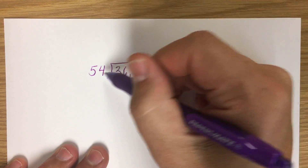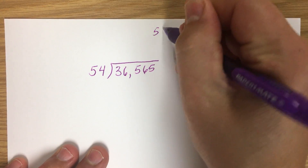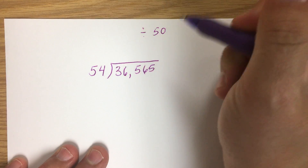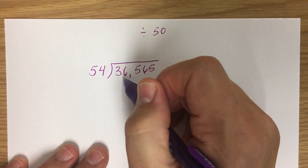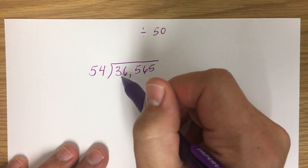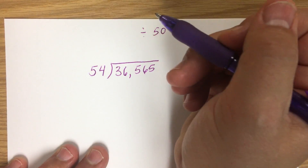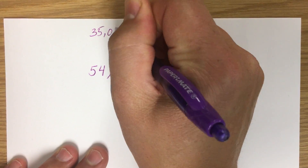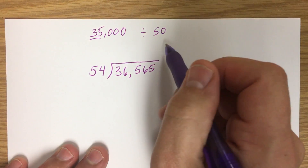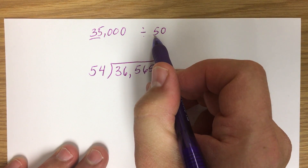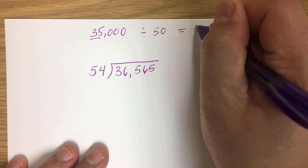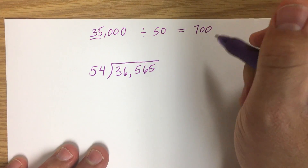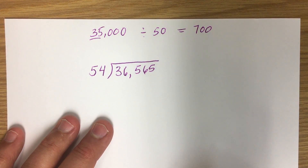I'm going to round 54 to 50 — that's my divisor — and round 36,565 to 35,000. So I have an easy problem: 35,000 divided by 50. Since 35 divided by 5 equals 7, and I have three zeros minus one zero, that's two zeros. So whatever answer I get will be somewhere close to 700.